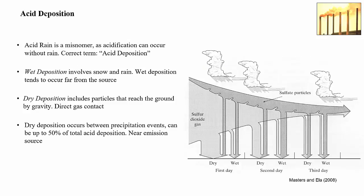This diagram from an environmental textbook by Masters and Ela shows the process of dry and wet deposition. Dry deposition dominates near the emission source, such as near a coal-fired power plant. Far away from the plant, wet deposition dominates. The upper part of the diagram also shows the formation of fine sulfate particles from atmospheric reactions. These acidic particles eventually get washed out by rain and snow, ending up as wet deposition of acid.